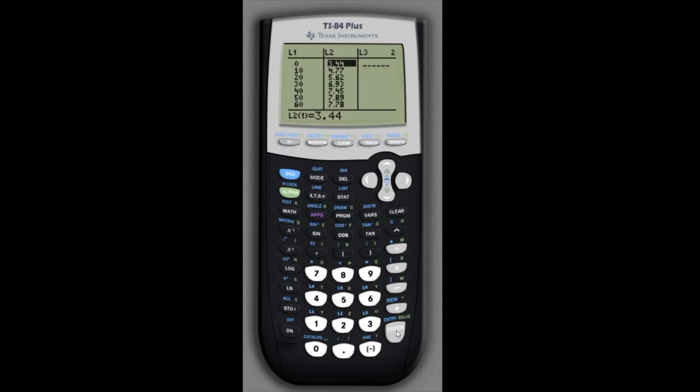So now we can do logistic regression. We're building a logistic population model. So again hit the stat button and go to the calc menu and now we want to look for the logistic regression option. So if we scroll down we'll eventually find the logistic option. It's option B very near the bottom of the list.